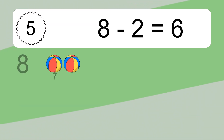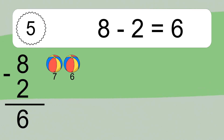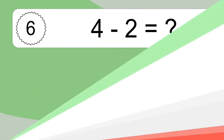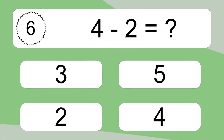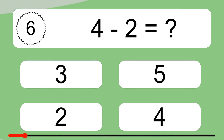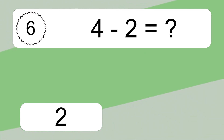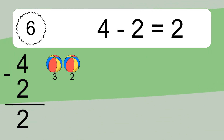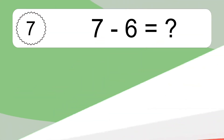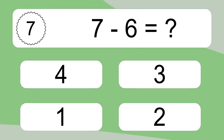Eight minus two equals six. Let's count it: seven, six. Four minus two equals what? Four minus two equals two. Let's count it: three, two.